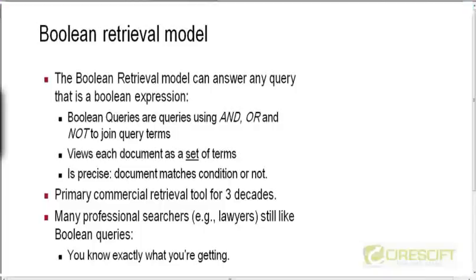There's something called the Boolean retrieval model, which is what we have looked at so far. It's the simplest retrieval model, and it turns out this is not the model used by modern search engines like Google, although there are some similarities. The core ideas we have learned equally apply to the other model, which we will come to later in this course.